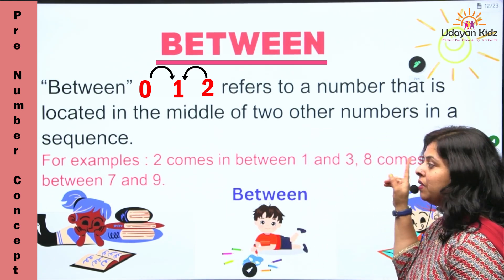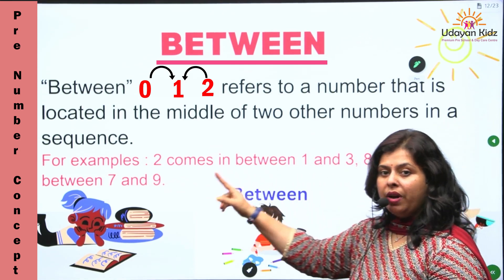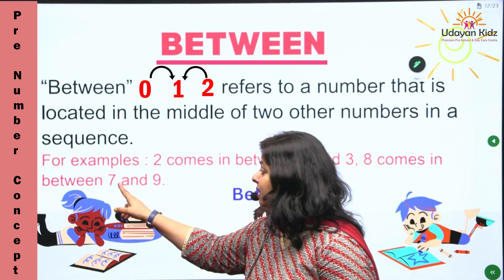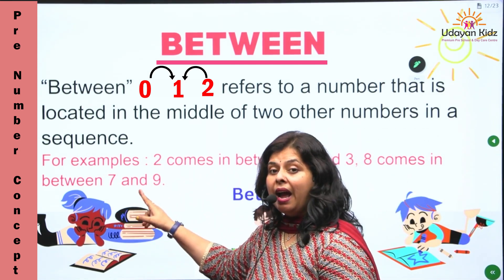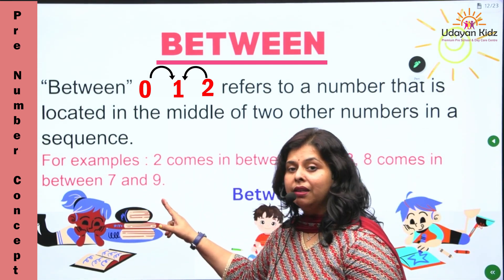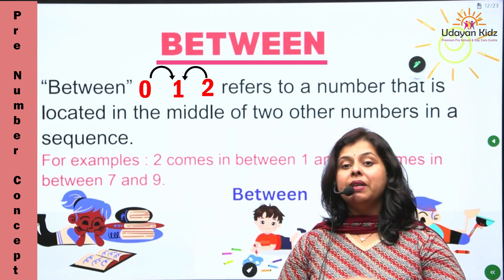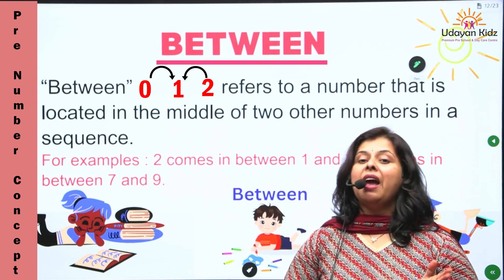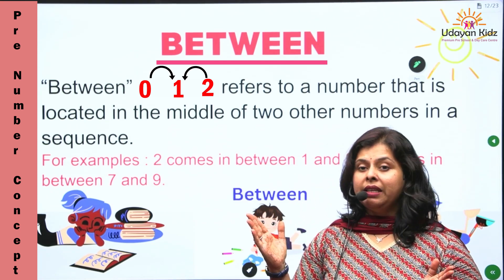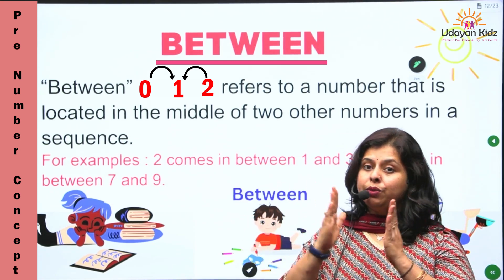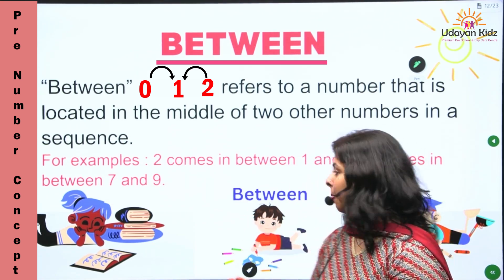Eight comes in between seven and nine. Number eight, number seven and number nine ke between aata hai, beech mein aata hai.